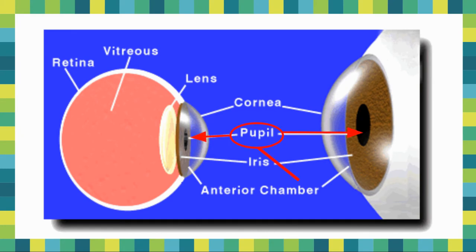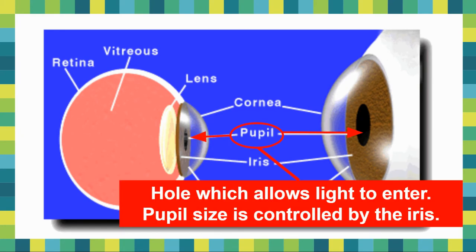The pupil is actually just a hole in your eye. Most people think it's an actual structure, but when you dissect the eye they ask, where's the pupil? Well, it's actually just a hole that allows light to enter into your eye, hence why you have the cornea covering it. If the cornea is damaged, things could get straight inside your eye. The iris controls the amount of light that it lets in and out.